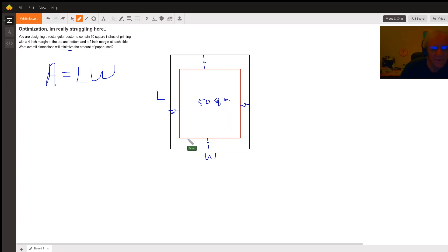And this dimension right here, the width of the red area, is W take away 4, because there's two-inch margins at each side. And likewise, this distance right here is L minus 8.